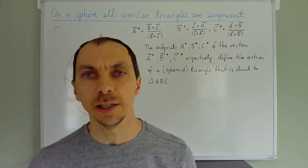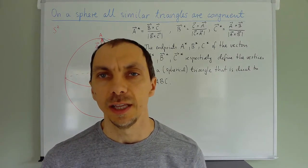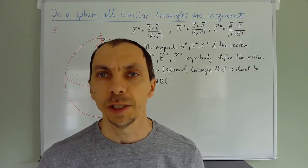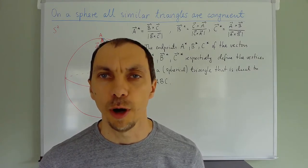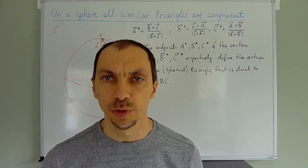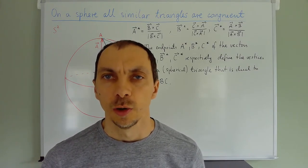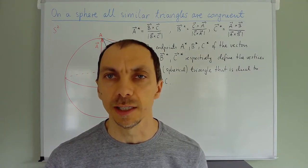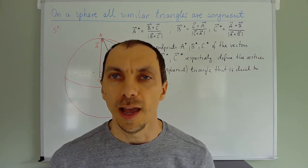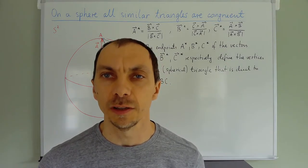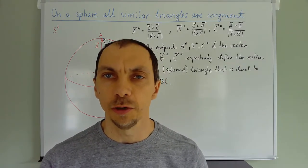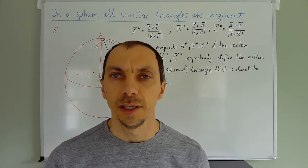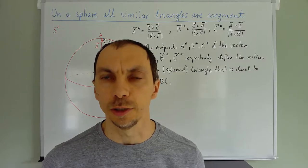But if you look at the title of this talk, you will see that that's not the case on the sphere. In particular, it is not possible to have two similar triangles whose side lengths do not coincide. So any two triangles on a sphere that are similar are also congruent. If you give me the angles of a triangle, then the side lengths are already completely determined.